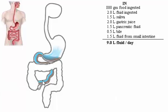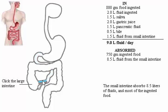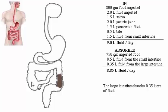The small intestine absorbs 8.5 liters of fluids and most of the ingested food. The large intestine absorbs 0.35 liters of fluid. The numbers we have supplied are estimates, but they provide a guide for understanding the large volumes of fluid that the GI tract handles in a day.